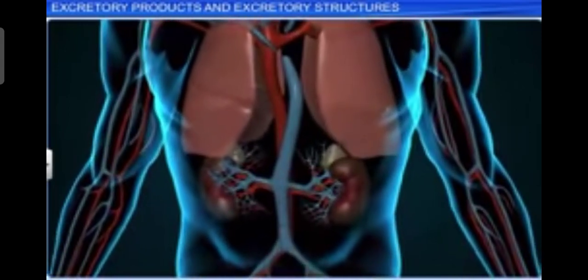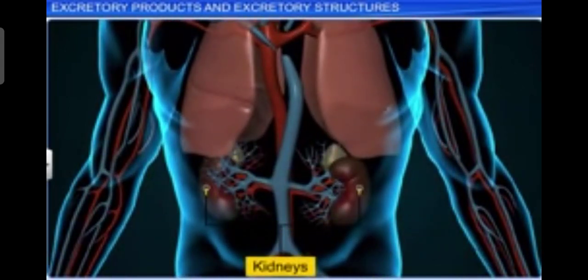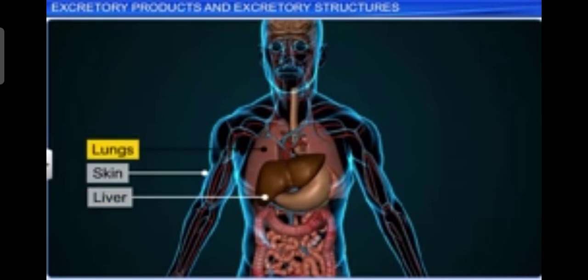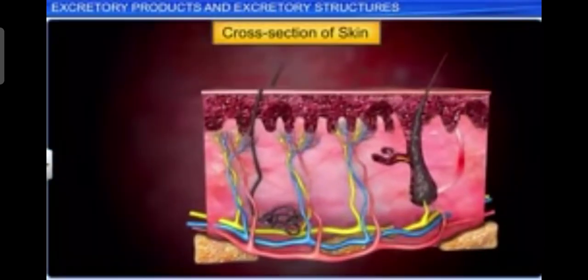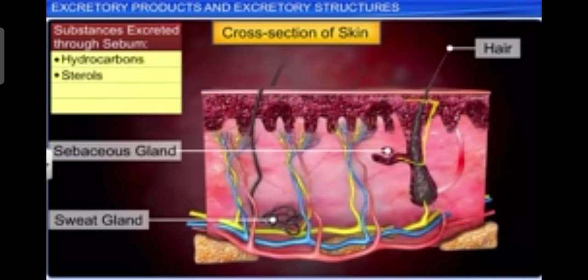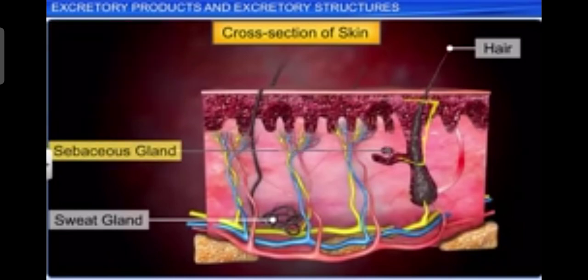The kidneys perform the main function of excretion in humans. Other than kidneys, lungs, liver, and skin also help in the elimination of excretory waste. The sebaceous glands eliminate certain substances like sterols, hydrocarbons, and waxes through sebum. This secretion provides a protective oily covering for the skin.